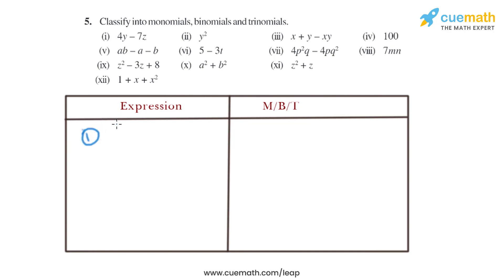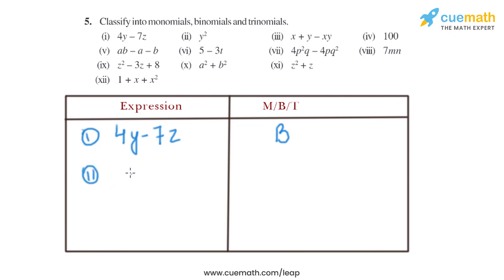In the first expression, 4y minus 7z is given. As we can see, there are two different terms: 4y and minus 7z, so that is basically a binomial. In the second part, y square is given. As we can see, there is only a single term, y square, so that is a monomial.